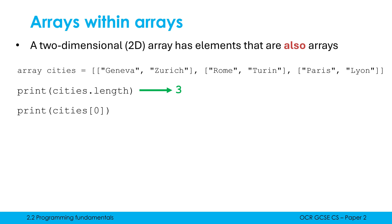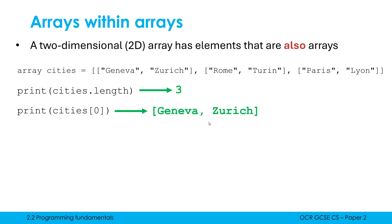If I print cities at index 0, what is cities index 0? Cities has 3 items. Index 0 points towards our first item, which happens to be Geneva and Zurich - that happens to be an array. So this would print out the array. Whether we lose our quotation marks or not depends on the language, but we get given an array because that's what the element is.